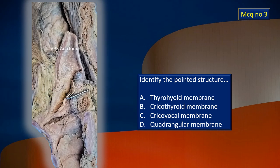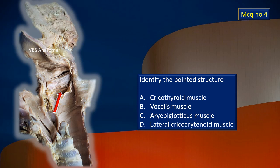MCQ number three. We are moving to a dissected specimen. One more item has been pointed out and you will have to identify what that particular structure is.